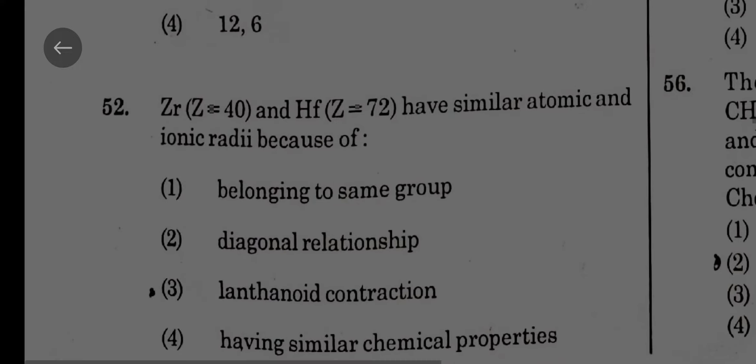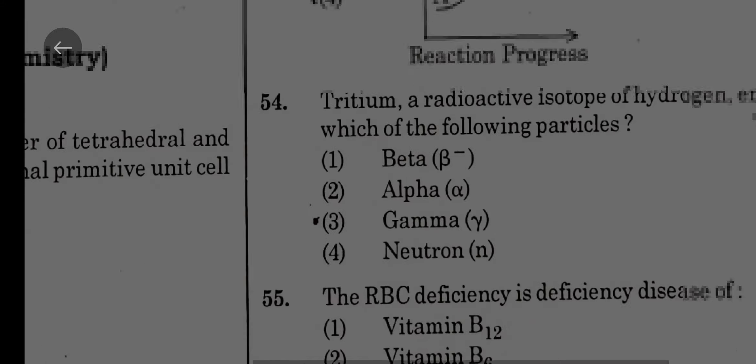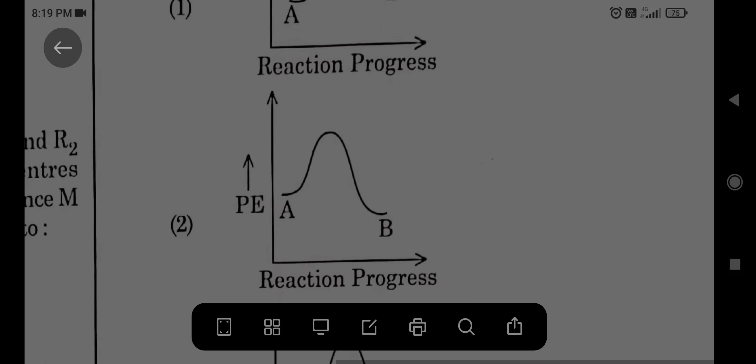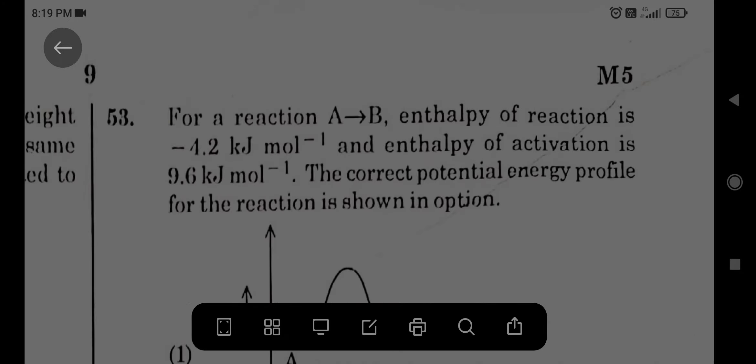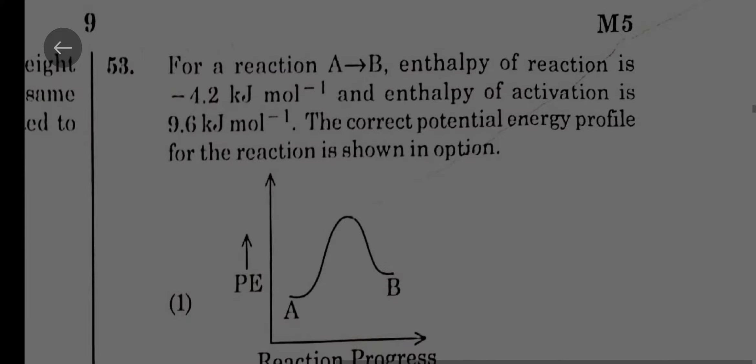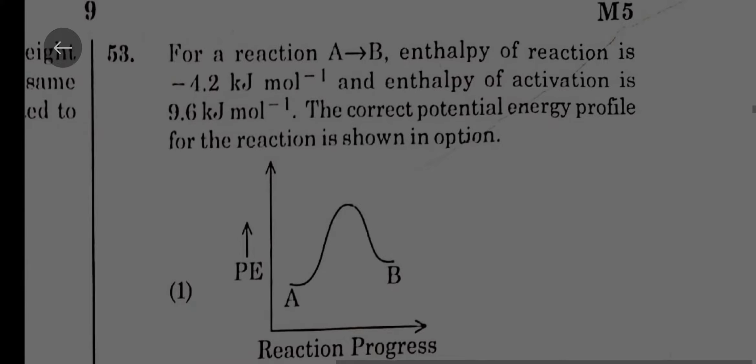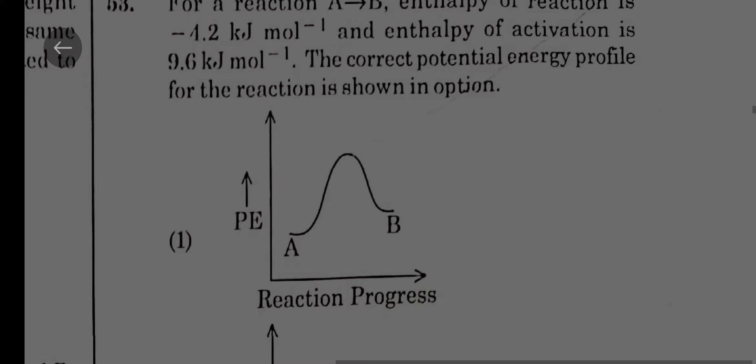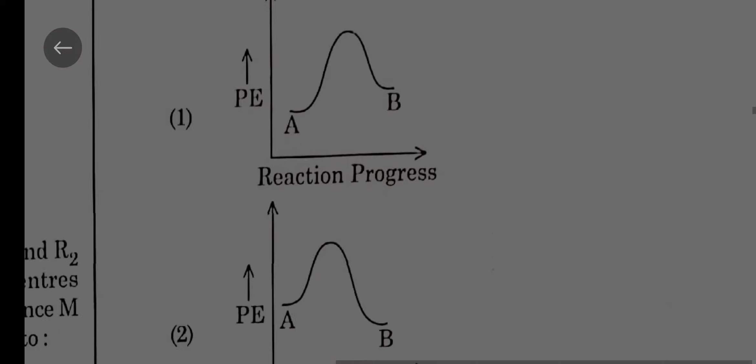For a reaction A to B, enthalpy of reaction is minus 4.2. That means delta H is negative. When delta H is negative, that is an exothermic reaction, so energy of reactants should be more than products. In this paper it is the second option you can see on the screen.